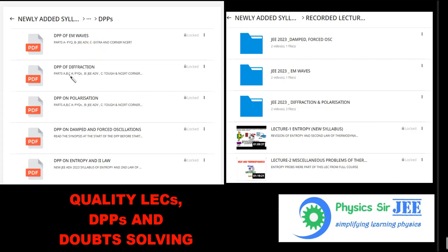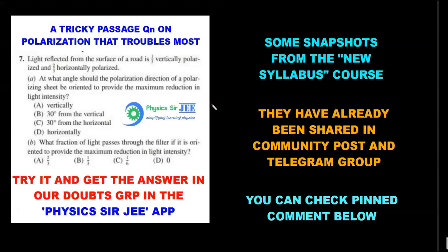Inside the course content folder, there are many DPPs for individual topics, each divided into parts A, B, and C. Part A covers previous year JEE Mains questions with solutions. Part B is exactly at the JEE Advanced level we expect them to ask. Part C has tougher questions and also NCERT corner points that people generally miss, modified into well-crafted questions. For recorded lectures, each topic has substantial coverage — diffraction and polarization has around three to four hours, and EM waves approximately two and a half hours.